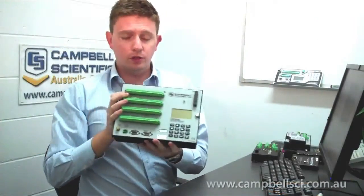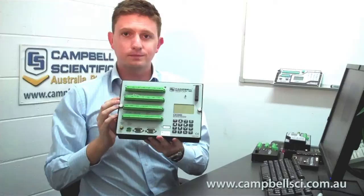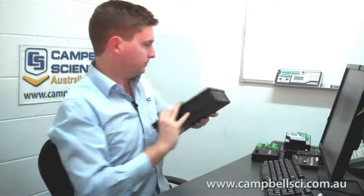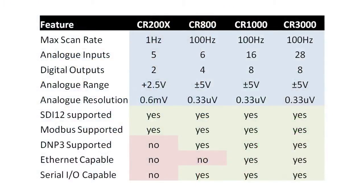For those used to older loggers, the CR-3000 has replaced the CR-23x. We also sell the CR-5000 and the CR-9000 if you've seen those on our price list — they're more expensive than the CR-3000 and are generally for people who want to measure really quickly, as they measure a lot faster than the CR-3000. And just to end, there's a little comparison sheet comparing those four loggers — their voltage ranges, what they support, and their scan rates, which is their measurement rate.